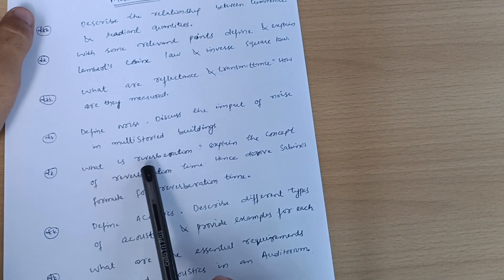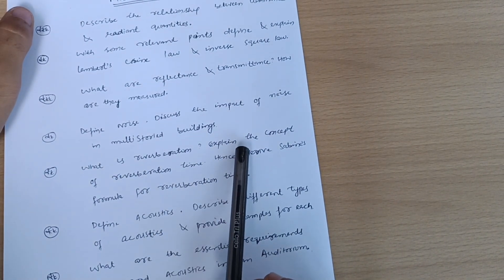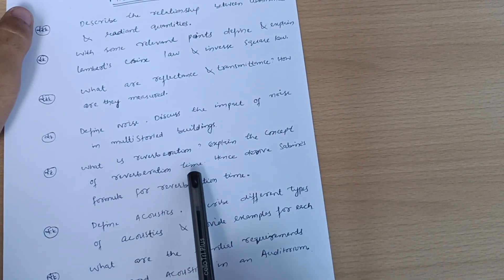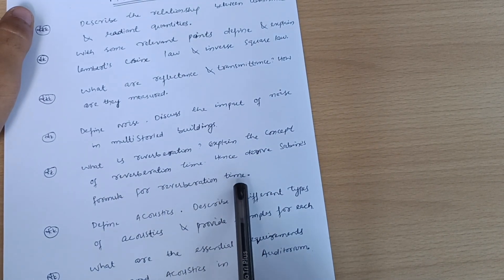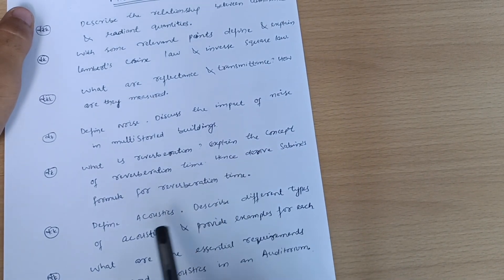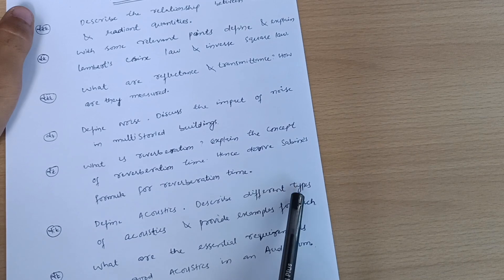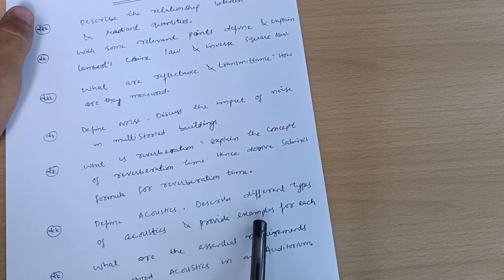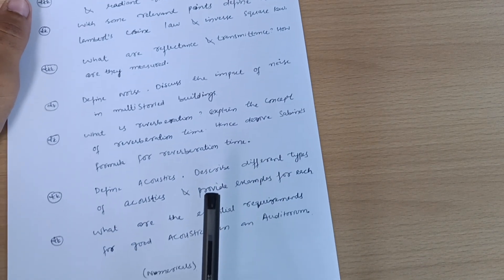Next is: what is reverberation? Explain the concept of reverberation time, hence derive Sabine's formula for reverberation time. Next is define acoustics, describe different types of acoustics, and provide examples for each.